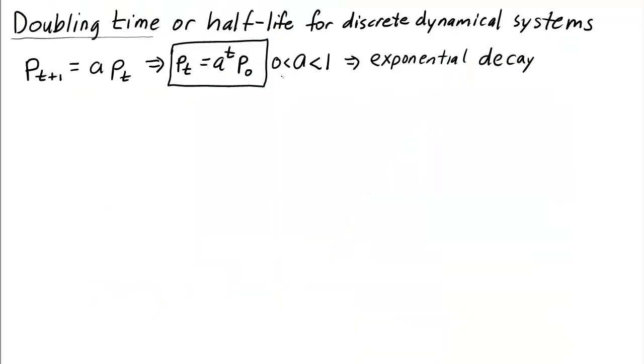So what changes if now the parameter a is between 0 and 1? Well, now we have exponential decay rather than exponential growth. So, of course, we won't be doubling. But instead what we can do is ask how long does it take us to get to half the original value. And this is the half-life.